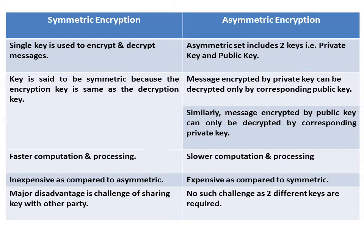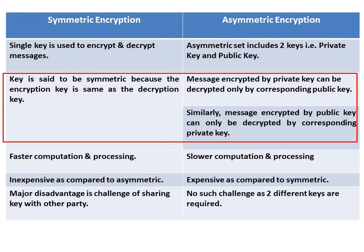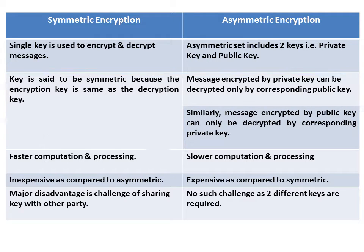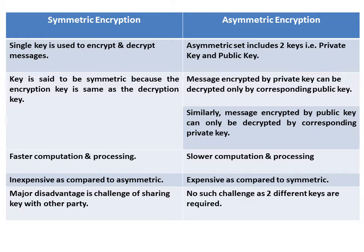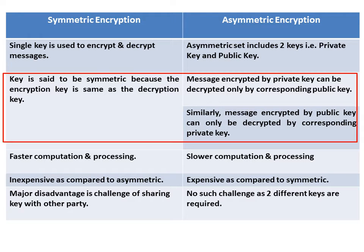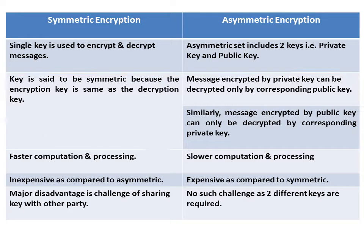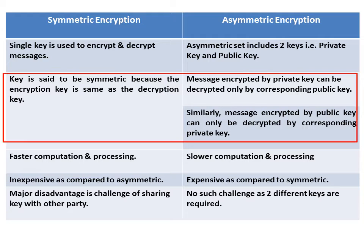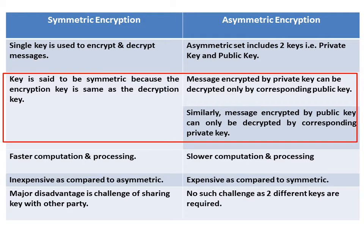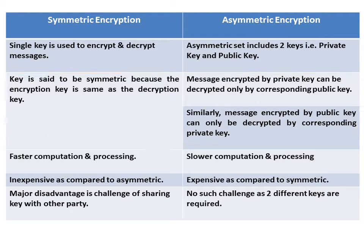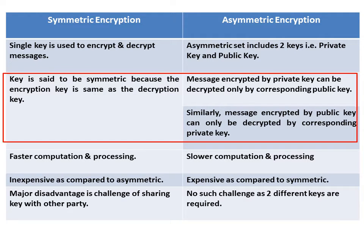A key is said to be symmetric because the encryption key is the same as the decryption key. In asymmetric encryption, a message encrypted by the private key can only be decrypted by the corresponding public key, and a message encrypted by the public key can only be decrypted by the corresponding private key.